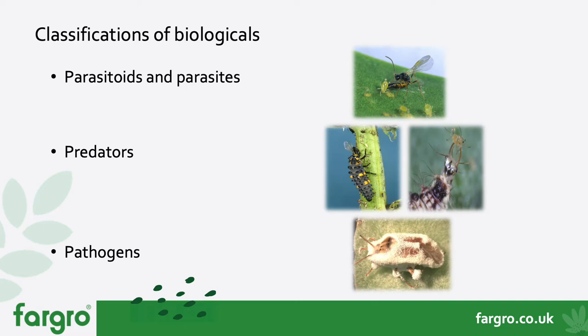Secondly, we have predators — on the right-hand side I've shown ladybird larvae and Chrysoperla lacewing larvae. These predators consume their prey from the outside in, biting into the cuticle. They are very useful for targeting a wide range of aphid species and can also be used for hotspot targeting — if you have hotspots of aphids, they can be applied directly for quick knockdown control.